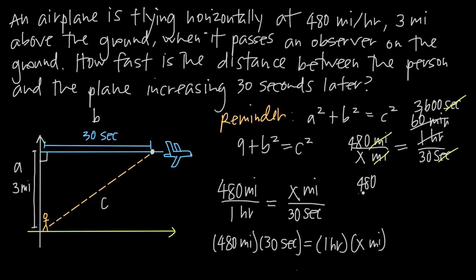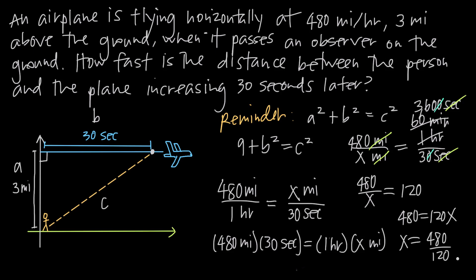We get 480 divided by x equals 3600 over 30. Canceling a zero from each gives us 360 divided by 3, which is 120. Multiplying both sides by x gives us 480 equals 120x. Dividing both sides by 120, we get x equals 480 over 120, which is just x equals 4. So the plane travels 4 miles in 30 seconds.